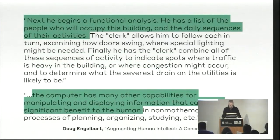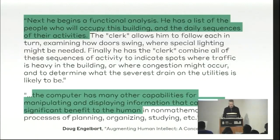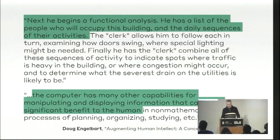He has a list of people who occupy a building and the daily sequences of their activities. The clerk allows him to follow each in turn, examining how doors swing, where special lighting might be needed. Finally, he has the clerk combine all these sequences of activities to indicate spots where traffic is heavy or where congestion might occur, and determine where the severest drain on utilities might be. The computer has many capabilities for manipulating and displaying information in planning, organizing, and studying. This was 1962.